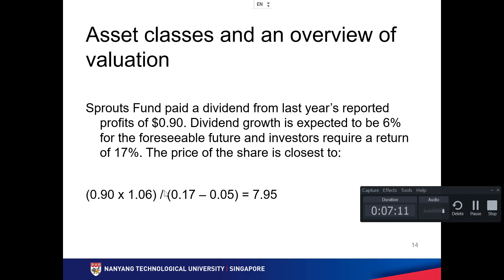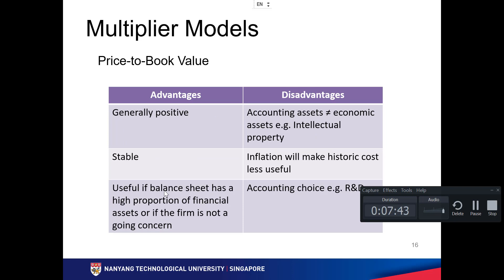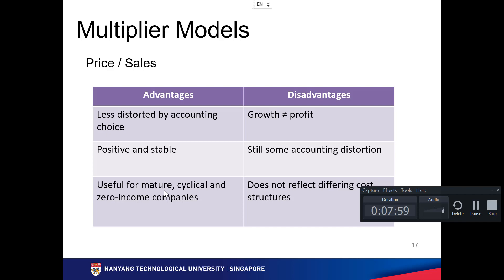The P/E ratio is very popular — price-to-earnings — and you focus more on leading P/E because it talks about the future, whereas trailing P/E talks about the past. The biggest problem with P/E is that you must have earnings — if the company makes a loss, P/E cannot be applied. P/B is more suited for asset-heavy companies like plantations, hospitals, and hotels. P/S — price-to-sales — is used when a company has no profit yet, common for early-stage companies.